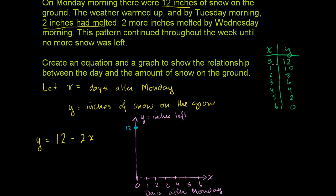So let's plot these points. We already plotted 0, 12 in that blue color. Now let's plot 1, 10. Then we can plot 2, 8. So 2 days after Monday, we have 8 inches left on the ground. That's on Wednesday.